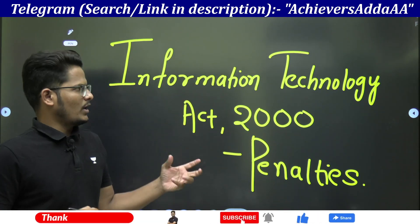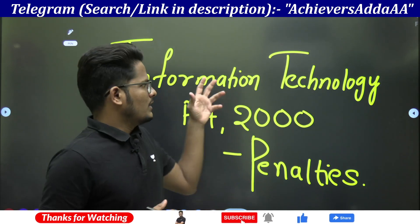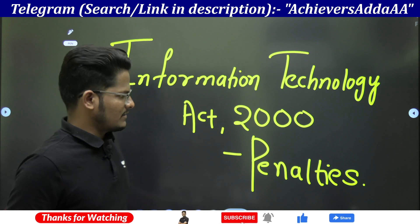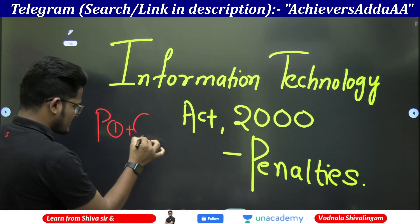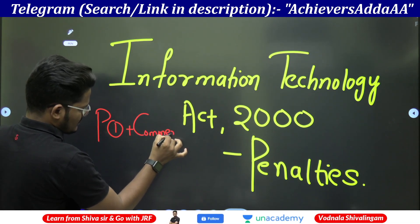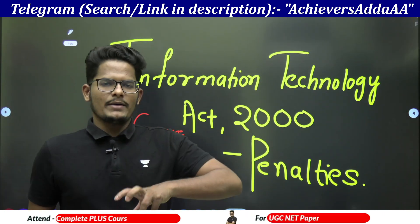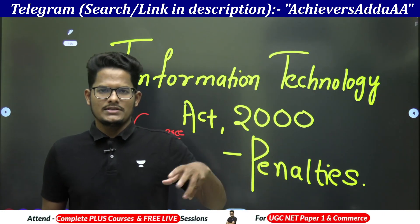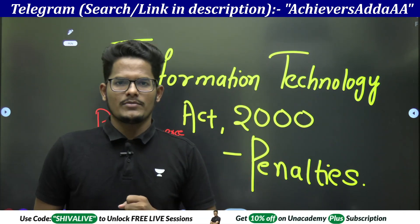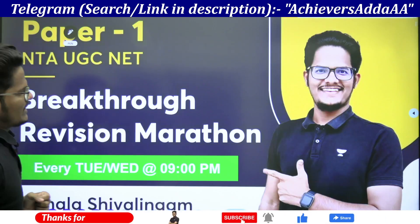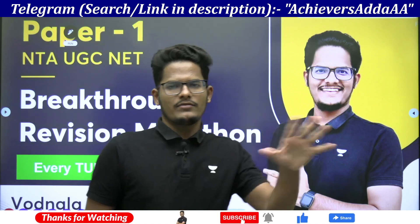In this video, I will be explaining in one shot the penalties and offenses related to Information Technology Act. This is going to be useful for the UGCnet paper 1 as well as paper 2 commerce and management. This will be a part of ICT unit number 18 paper 1 and legal aspects of business in commerce paper number 2. Total with a chart wise, three charts I will give where you can remember everything.